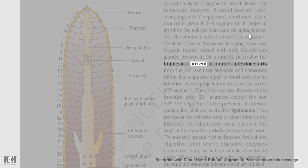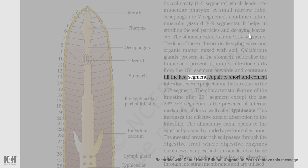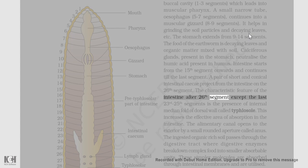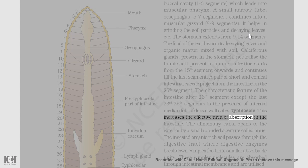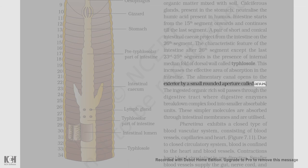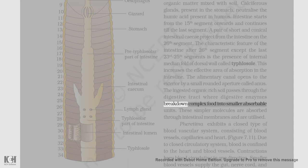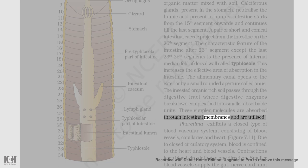The food of the earthworm is decaying leaves and organic matter mixed with soil. Calciferous glands, present in the stomach, neutralize the humic acid present in humus. The intestine starts from the 15th segment onwards and continues till the last segment. A pair of short and conical intestinal caeca project from the intestine on the 26th segment. The characteristic feature of the intestine after the 26th segment is the presence of an internal median fold of the dorsal wall called typhlosole, which increases the effective area of absorption. The alimentary canal opens to the exterior by a small rounded aperture called the anus. The ingested organic-rich soil passes through the digestive tract where digestive enzymes break down complex food into smaller absorbable units, which are then absorbed through intestinal membranes.